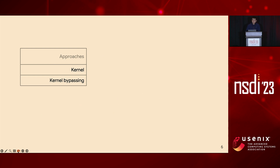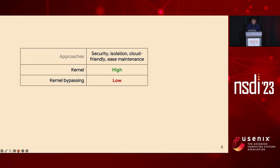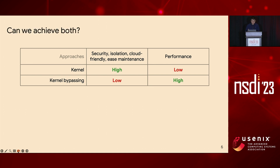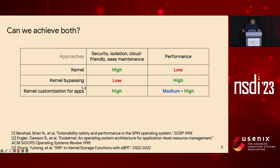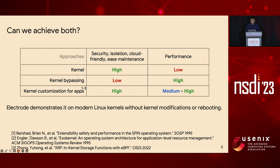Let's ask at a high level what we really want. Kernel and kernel bypassing are two extreme directions for building cloud applications. We want the security, isolation, and cloud-friendliness of the kernel, while desiring the performance of kernel bypassing. Can we achieve both? The answer is yes — the direction we adopt is to customize the existing kernel based on application needs to reduce kernel overhead. This gives us the same level of security isolation as the kernel approach. Kernel customization for applications is not a brand new idea — Spring and Exokernel did it a long time ago, and the recent XRP system modified the existing kernel to accelerate storage applications. Electrode will demonstrate this idea is still possible and beneficial for widely deployed kernels without any kernel code modifications or rebooting. We target UDP-based applications inside data centers with reliable and fast networks.